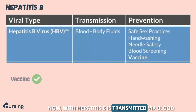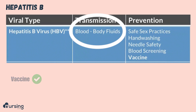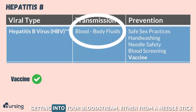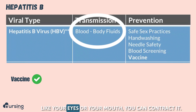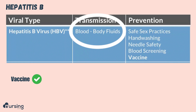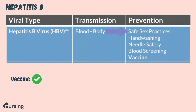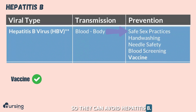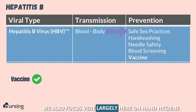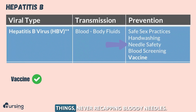With hepatitis B, it's transmitted via blood and body fluids. This means any body fluid getting into your bloodstream, either from a needle stick, or even if it gets into your mucous membranes like your eyes or your mouth, you can contract it. It can also be transmitted sexually. So we want to educate our patients on safe sex practices, and we focus very largely on hand hygiene and needle safety.